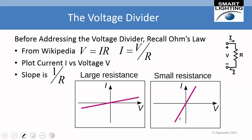Before addressing the voltage divider, let's recall Ohm's law: v equals ir, i equals v over r. If you plot current versus voltage — which is very common — a large resistance gives a line with a shallow slope, and a small resistance gives a steeper line, because the slope equals one over the resistance.